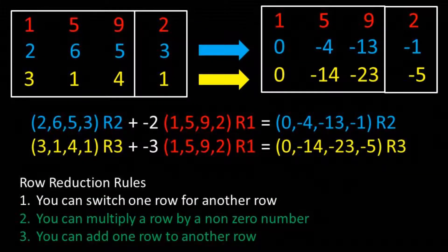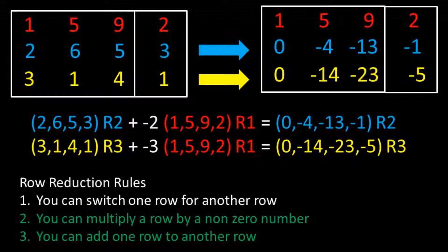Now let's take row 2 and add a negative 2 times row 1 to get a 0 in column 1 of row 2. So for the first entry, we take 2 plus negative 2 times 1 and we get 0. For the second entry, we take 6 plus negative 2 times 5 and we get negative 4.